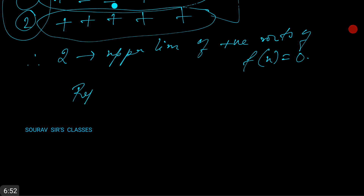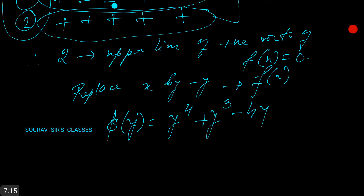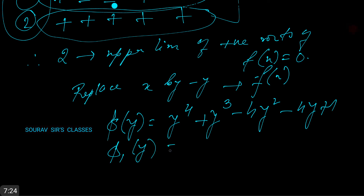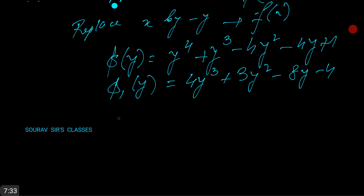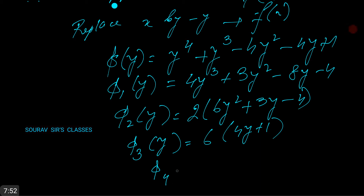Now, replacing x by minus y in f(x) — we'll denote this new function as phi. So phi(y) = y to the power 4 plus y cubed minus 4y squared minus 4y plus 1. Similarly, differentiating: phi1(y) = 4y cubed plus 3y squared minus 8y minus 4, and phi2(y) = 6y squared plus 3y minus 4.